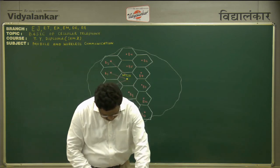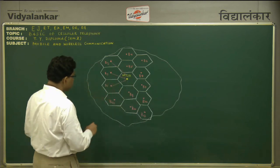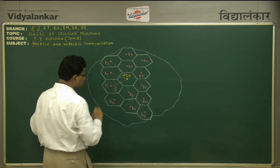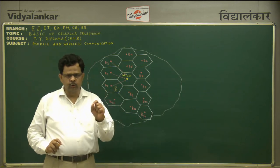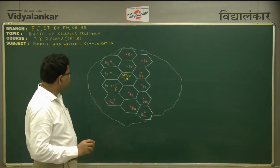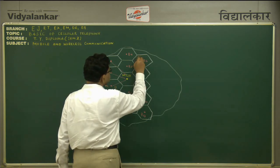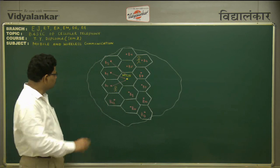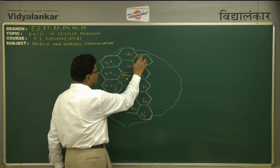Now let us see how a mobile telephone works. Consider a person is in base station B1 — this is the calling person — and this person wants to make a call to another person who is present in base station B6. This is my calling person and that is my called person.